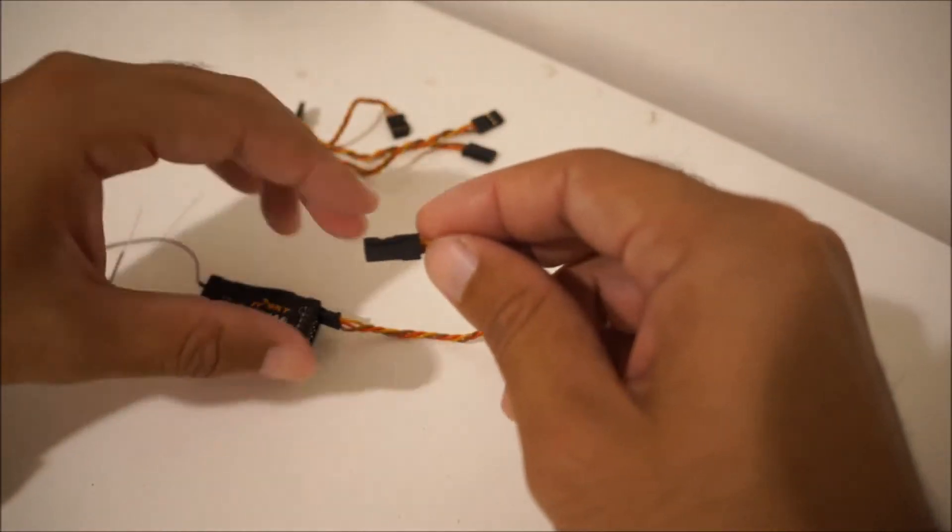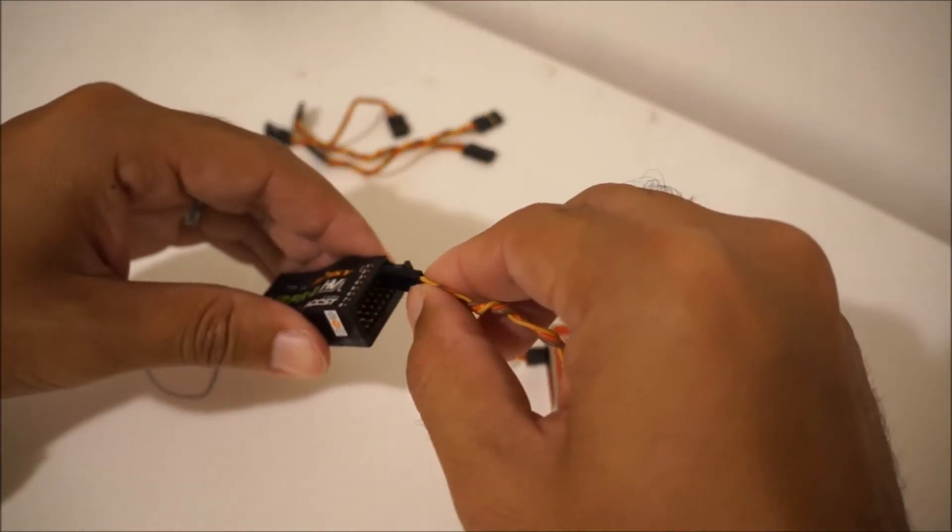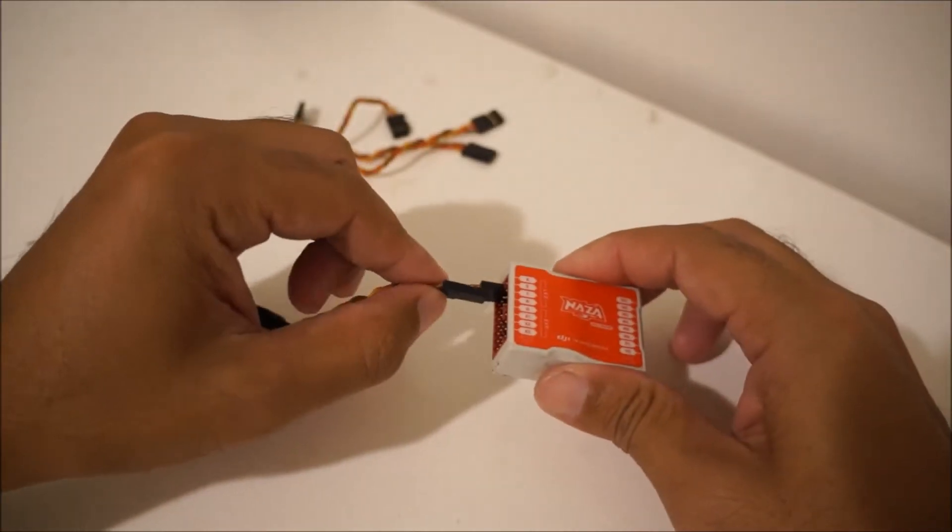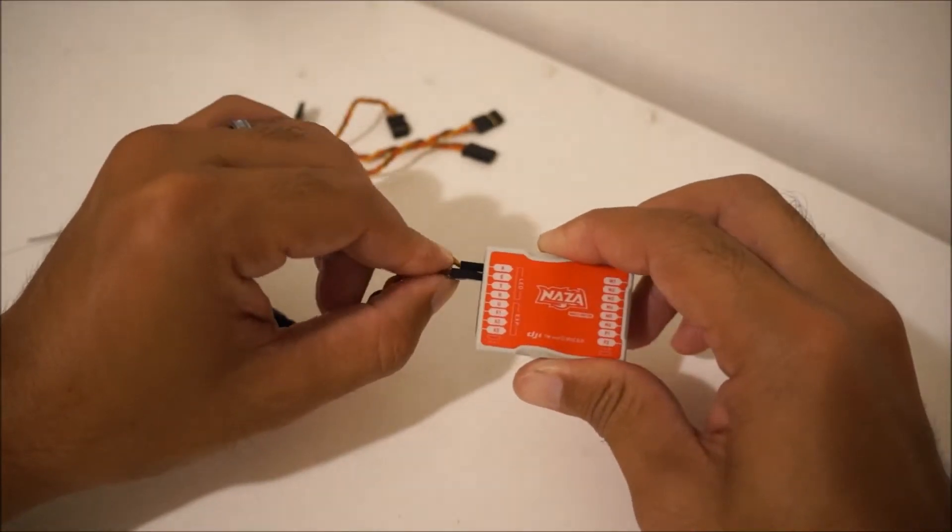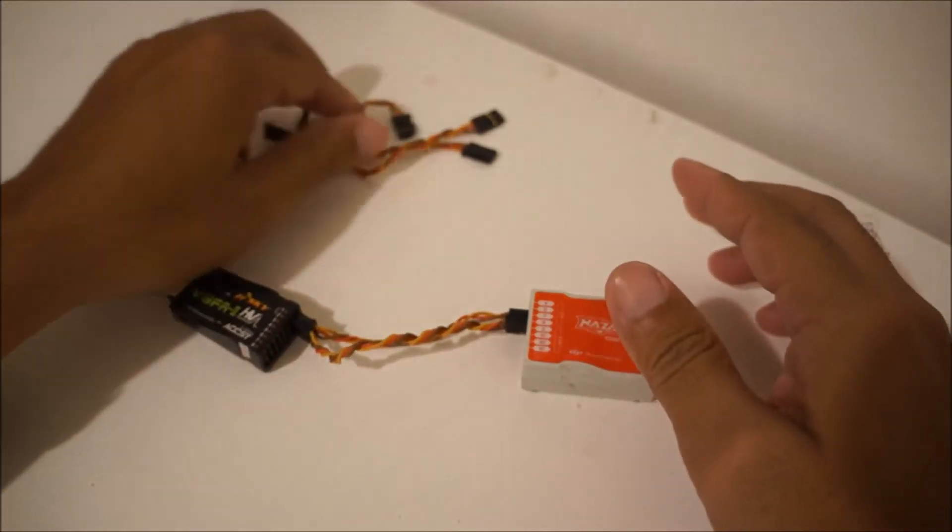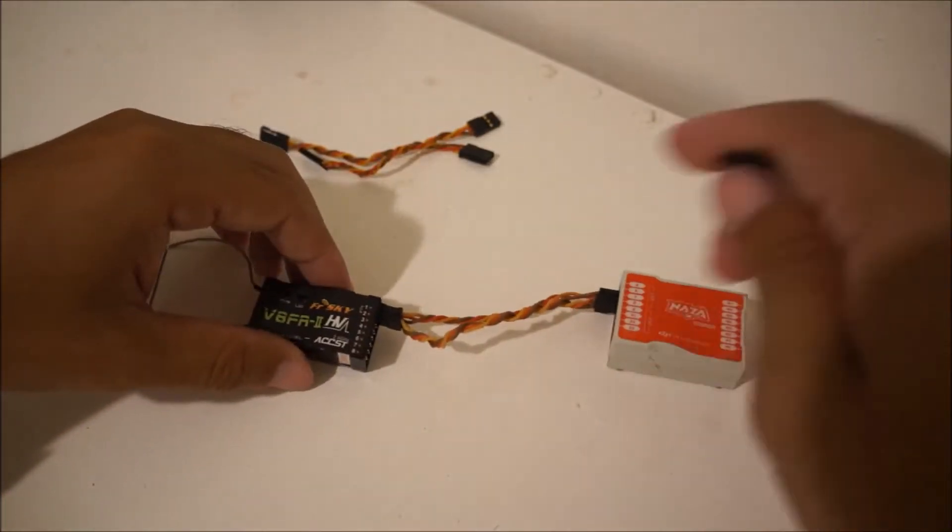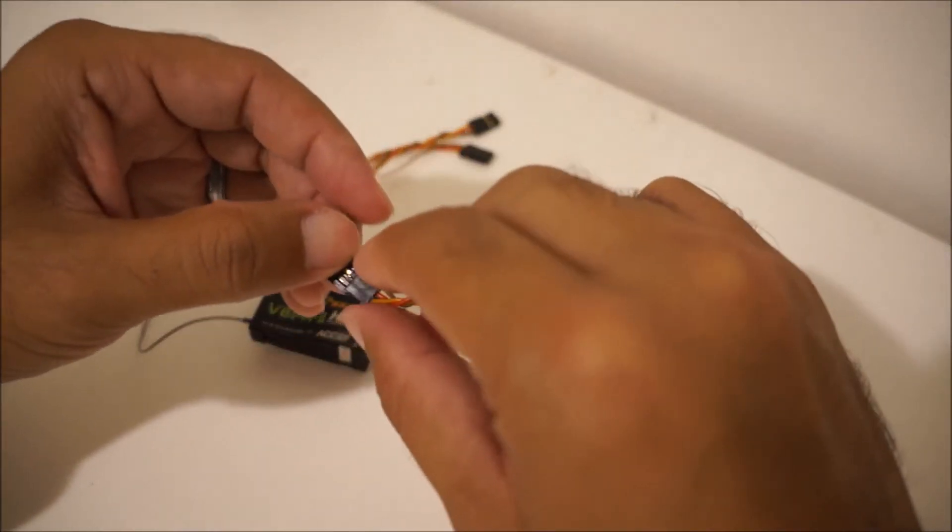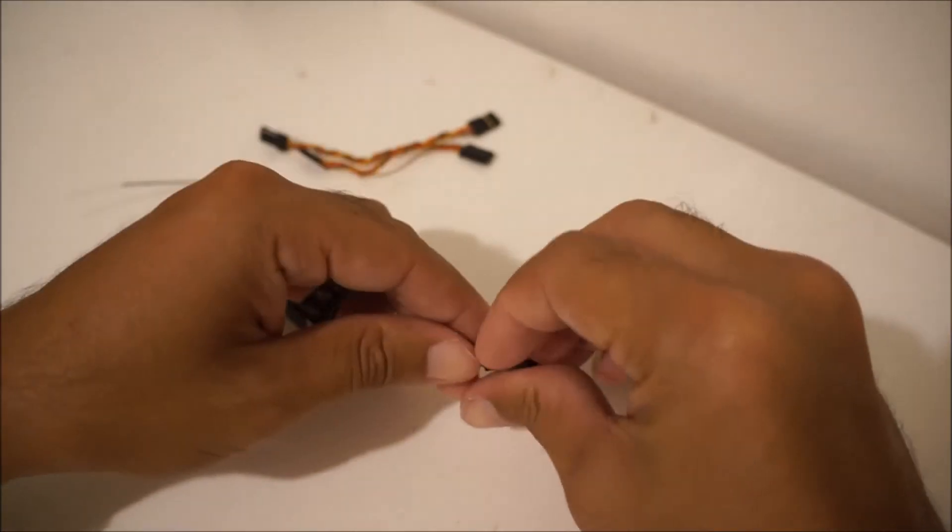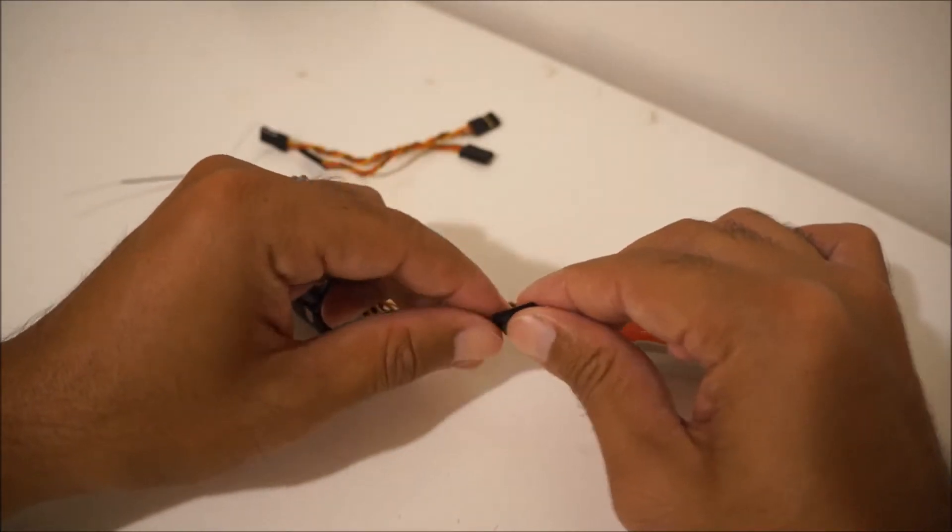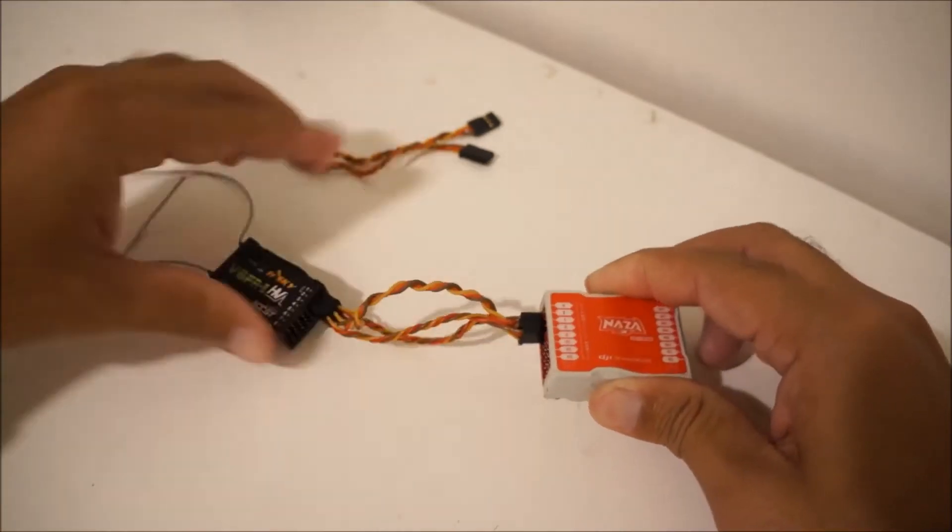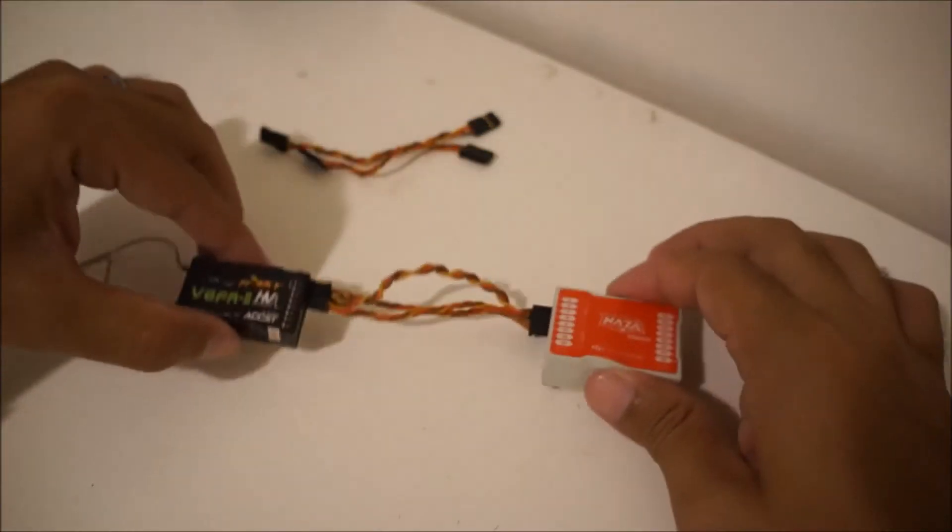Next one would be the elevator, and again when you plug these things in you got to be careful with the pins. And that's your E for elevator. Next one is aileron, elevator, rudder. There, and this one goes like so. So that's three channels so far.